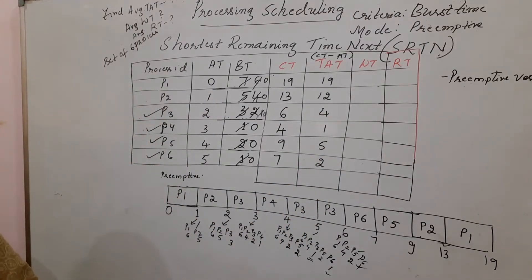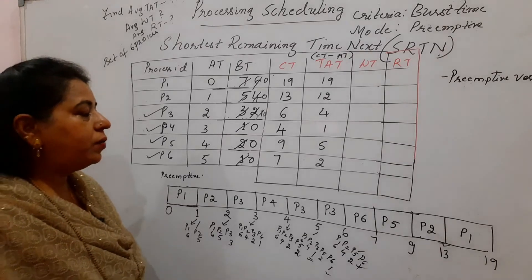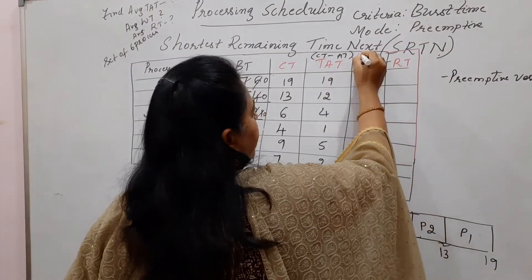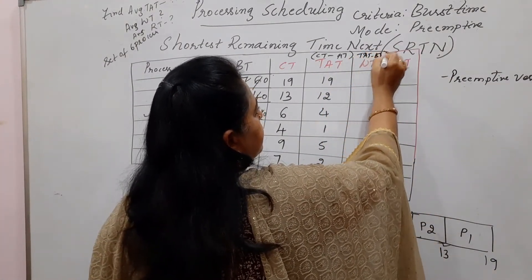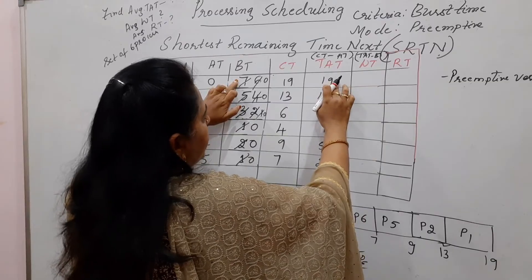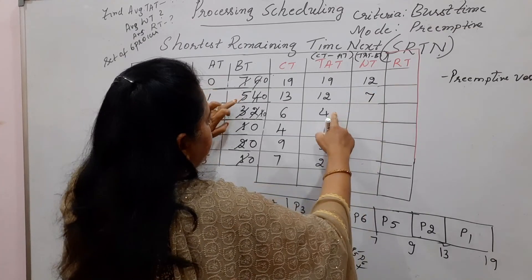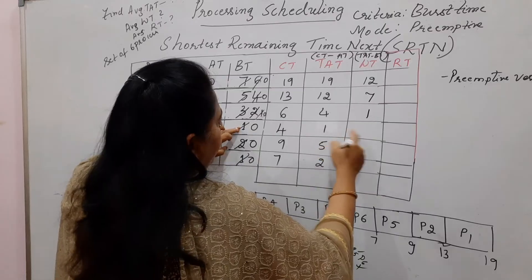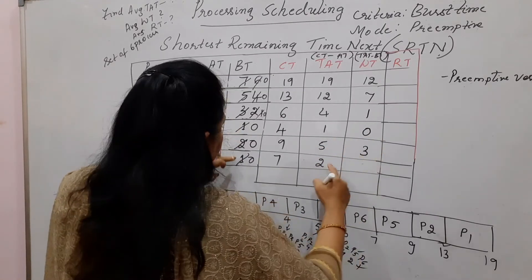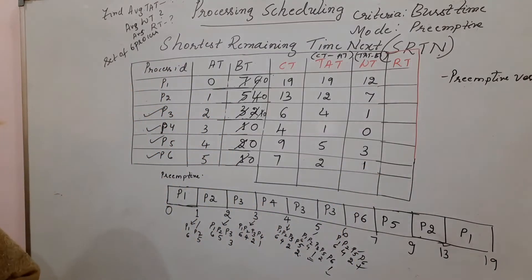Waiting time equals turnaround time minus burst time: P1=19−7=12, P2=12−5=7, P3=4−3=1, P4=1−1=0, P5=5−2=3, P6=2−1=1. So the waiting time values for the 6 processes are 12, 7, 1, 0, 3, 1.